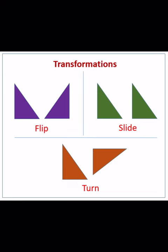In your textbook, reflection is also called a flip. Now, if you look at the purple shape in front of you, you can see that the purple triangle on the left has been flipped over to the right hand side. It's like a mirror image.